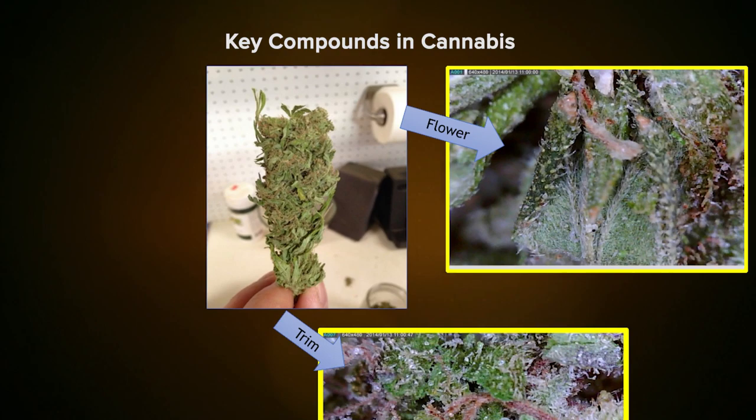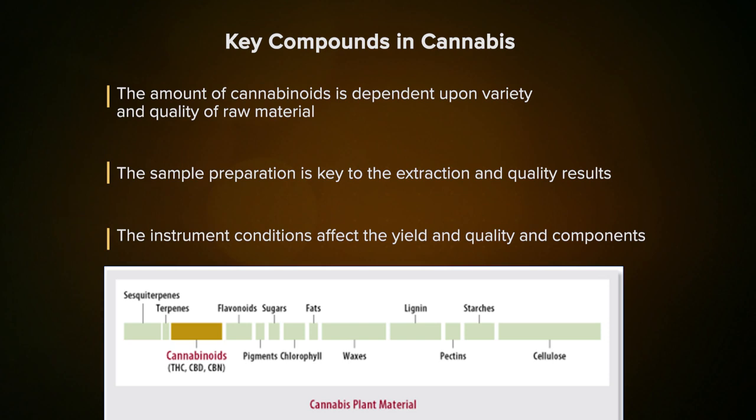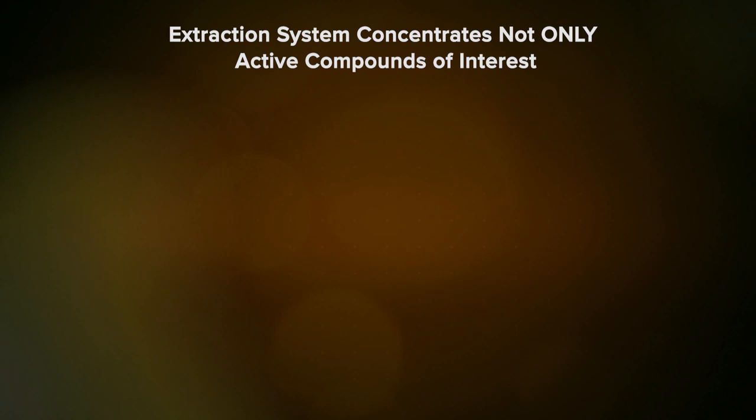Let's look at some of the key compounds in cannabis. We're familiar with the pictures you see in magazines and on the web — the trichomes and the different colors of different cannabis. As you look at each one, it's important to note, as shown in the chart below, that the key compounds include terpenes, cannabinoids, waxes, starches, and alkaloids. There's a significant number of them, and it's not just a few compounds for a formulation.